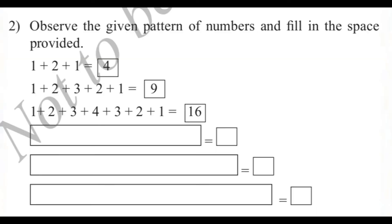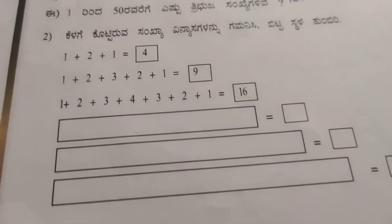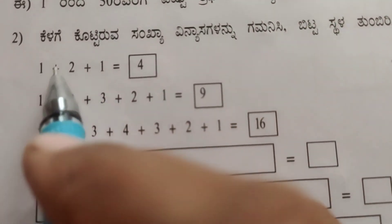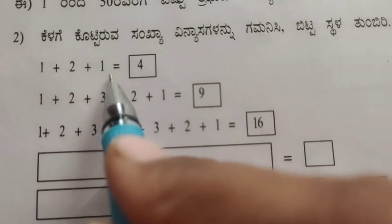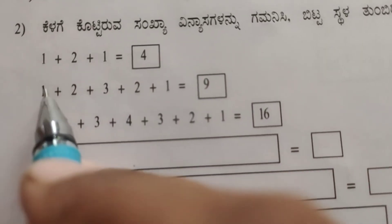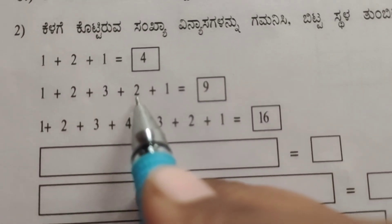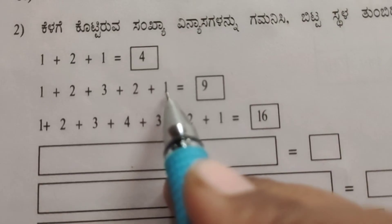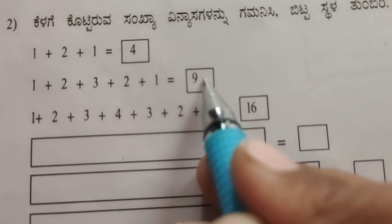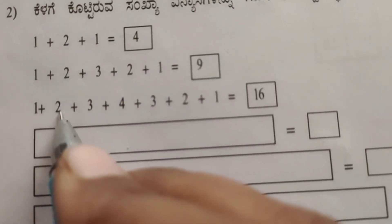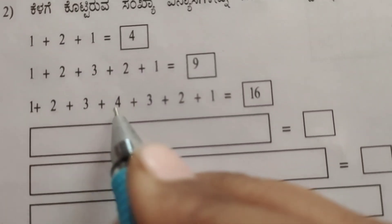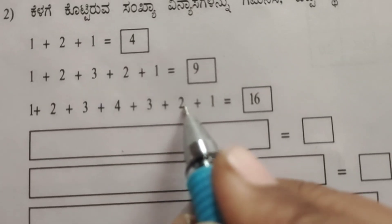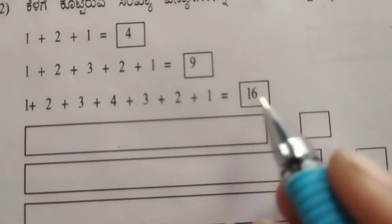Second question: observe the given pattern of numbers and fill in the space provided. 1 plus 2 plus 1 equals 4. 1 plus 2 plus 3 plus 2 plus 1 equals 9. 1 plus 2 plus 3 plus 4 plus 3 plus 2 plus 1 equals 16.